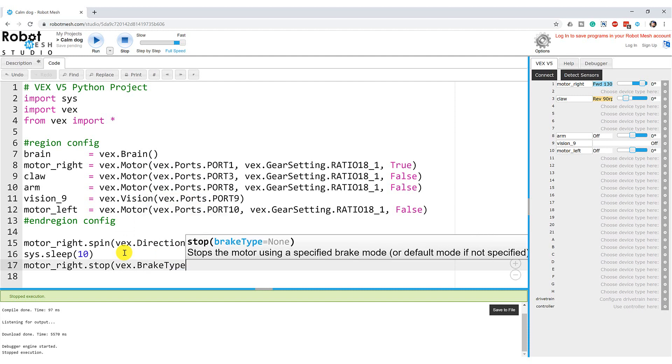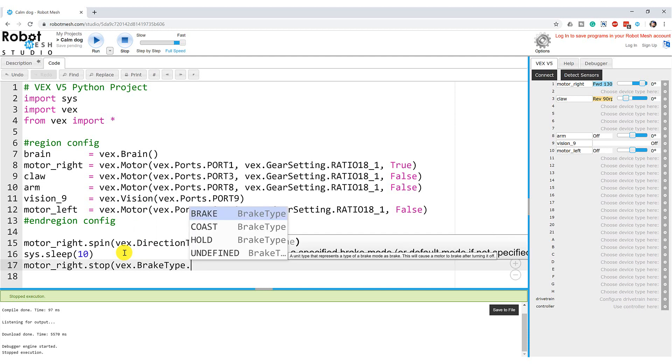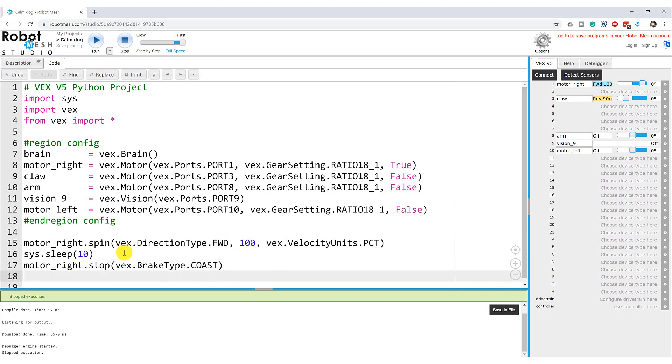and then dot again and here I have my three choices: brake, coast, and hold. Let's choose coast and let's make the motor coast for a couple of seconds here just so we can see what happens. We go sys.sleep5 and let's run my program and see what happens.